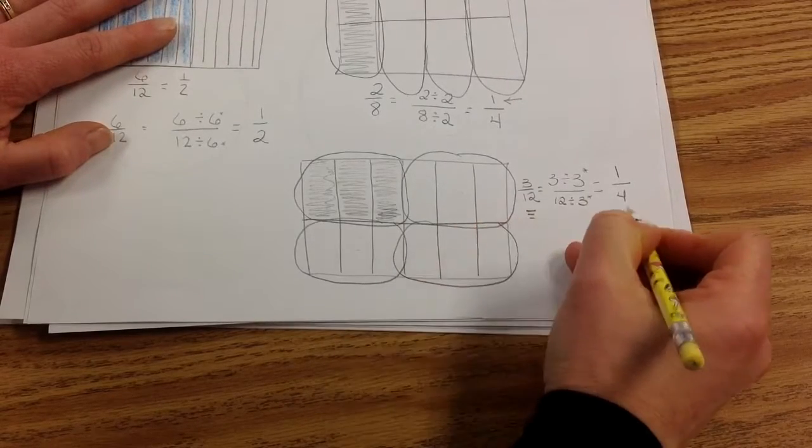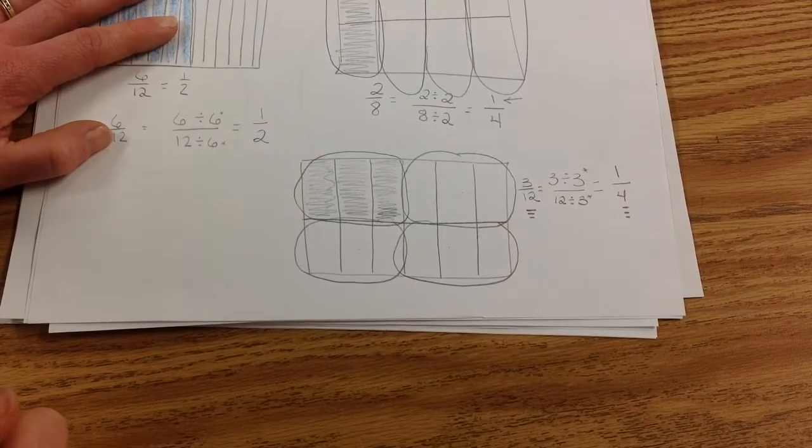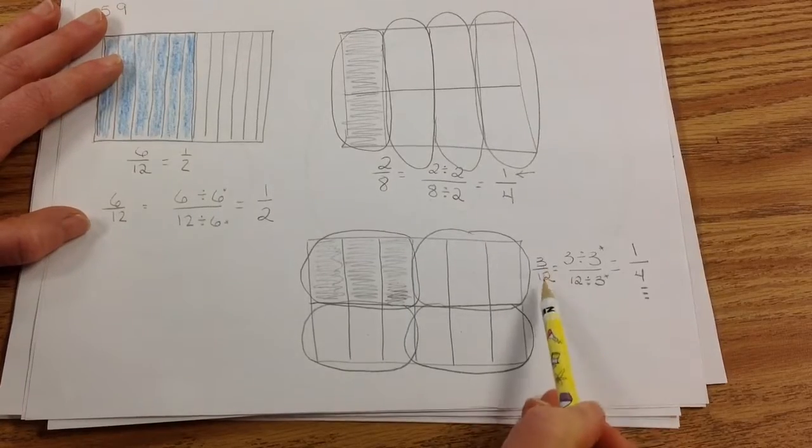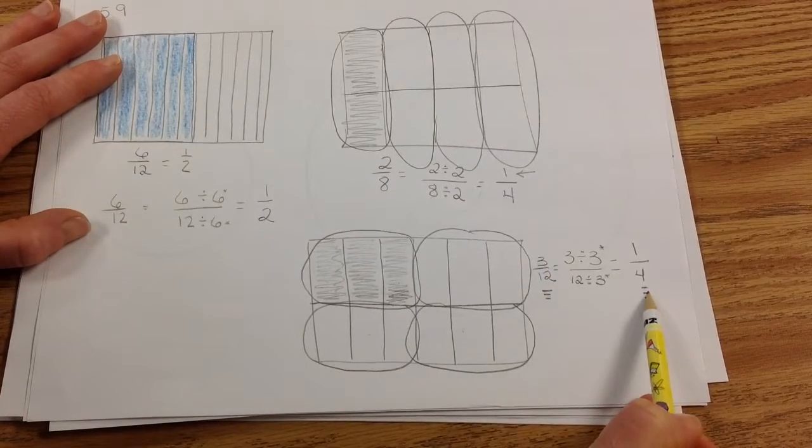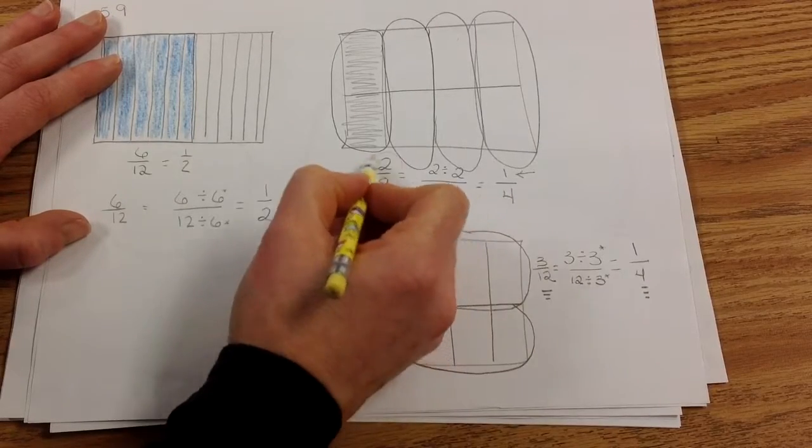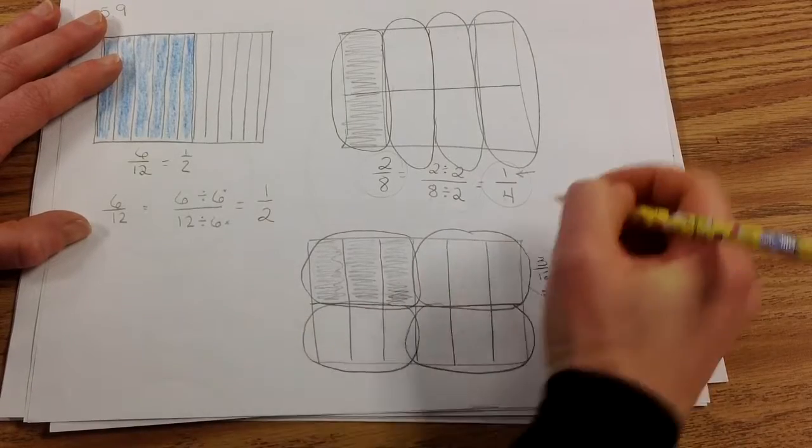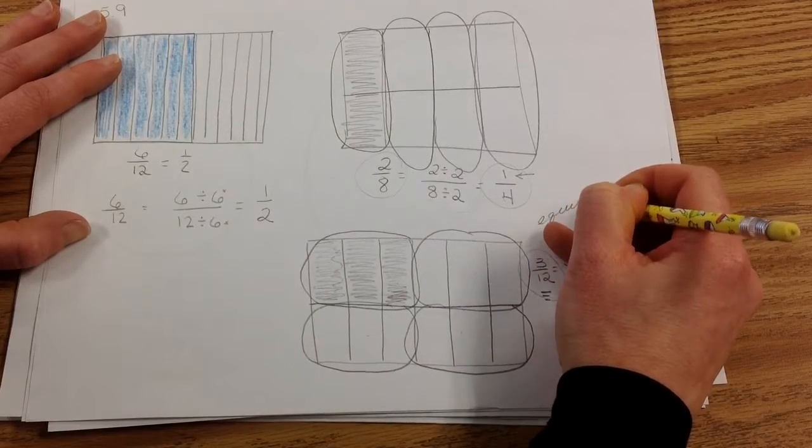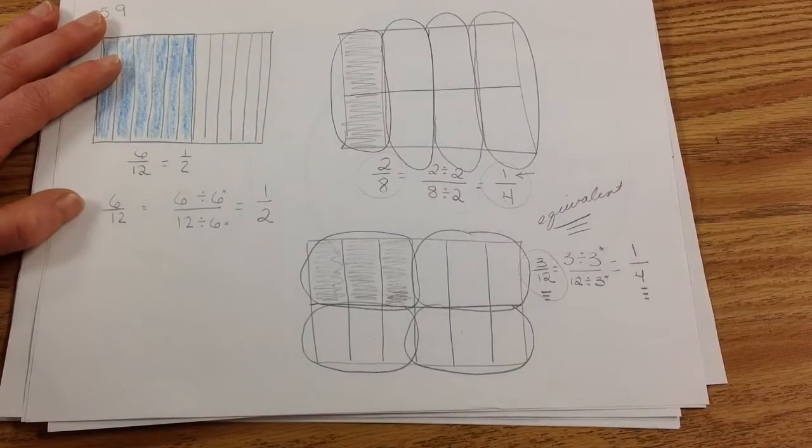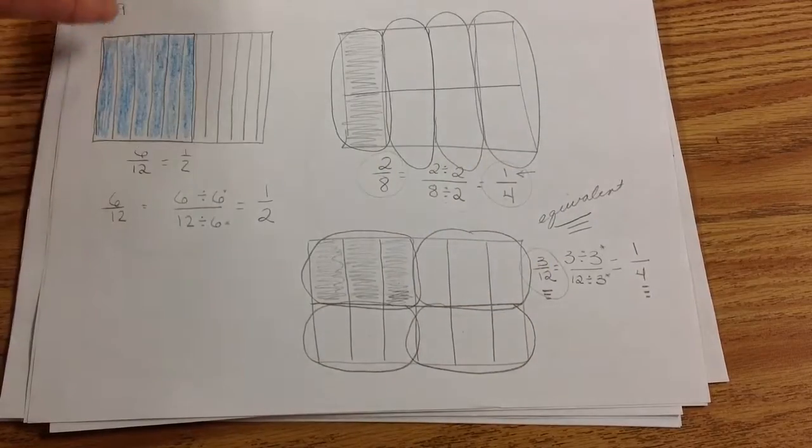That proves that 3 twelfths is equivalent to 1 fourth. They are equivalent. If you look at these two area models, you can see that 3 twelfths equals 1 fourth and 2 eighths equals 1 fourth. So guess what? 2 eighths, 1 fourth, and 3 twelfths are all equivalent. Because they all equal 1 fourth. All right, let's go ahead and move on.